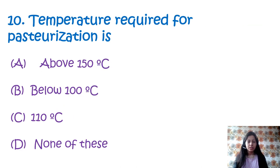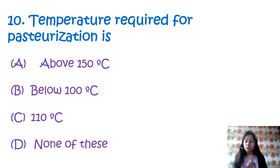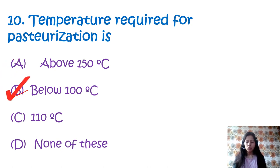Question 10: The temperature required for pasteurization is — option A: above 150°C, option B: 100°C, option C: 110°C, option D: none of these. Pasteurization has two main types: LTLT (low temperature, long time) and HTST (high temperature, short time). LTLT involves heating milk to 65°C for 30 minutes, while HTST involves heating to 72–74°C for 15 to 20 seconds. The temperatures are all below 100°C, so the correct answer is none of these — below 100°C.